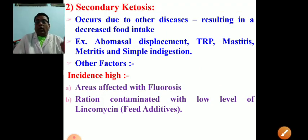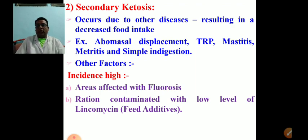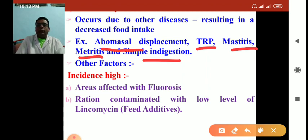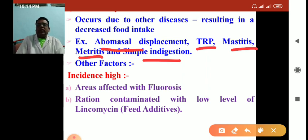In secondary ketosis, a concurrent disease in the patient that causes decreased food intake is responsible for the occurrence of ketosis. Examples include abomasal displacement, traumatic reticuloperitonitis, mastitis, and simple indigestion — any disease causing abnormality in feed intake leads to secondary ketosis.